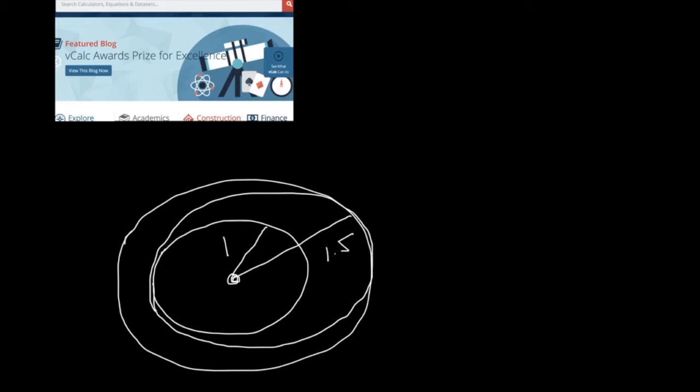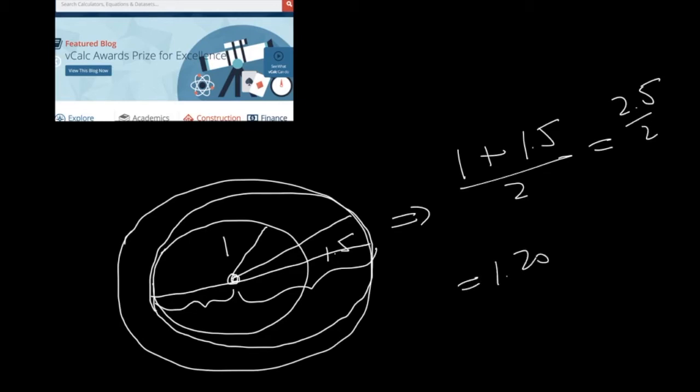What would be the semi-major axis of such an ellipse? So let's think about that. We go from here to here. So it's one and a half astronomical units on this side and one astronomical unit on this side. So that makes it a half of one plus one and a half. So one plus one and a half divided by two, right? So that's 2.5 divided by two or 1.25 astronomical units.